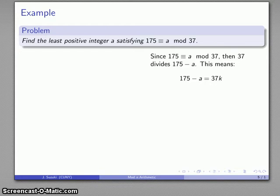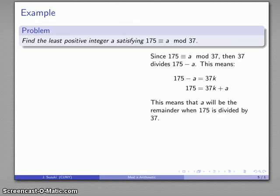175 - a = 37k for some k, which rearranges to 175 = 37k + a. This means that if I'm looking for the least positive integer satisfying this equation, a will be the remainder when 175 is divided by 37.